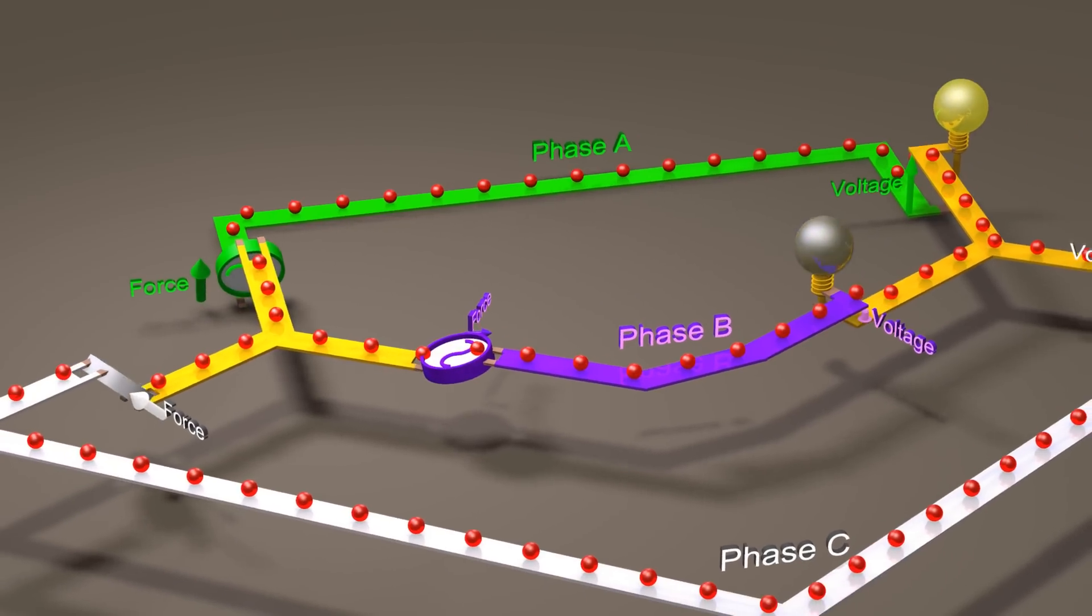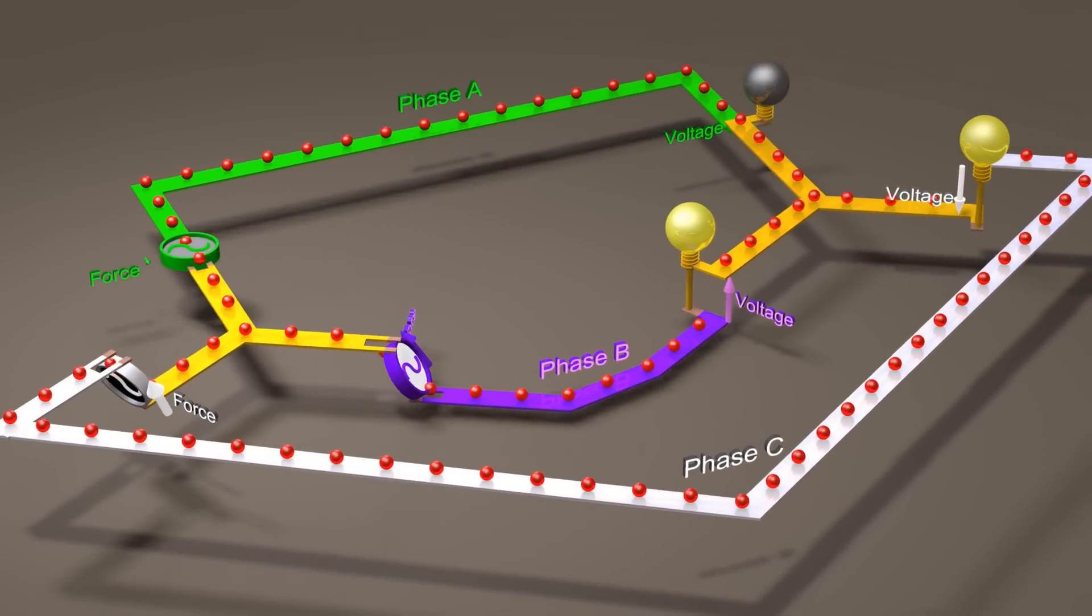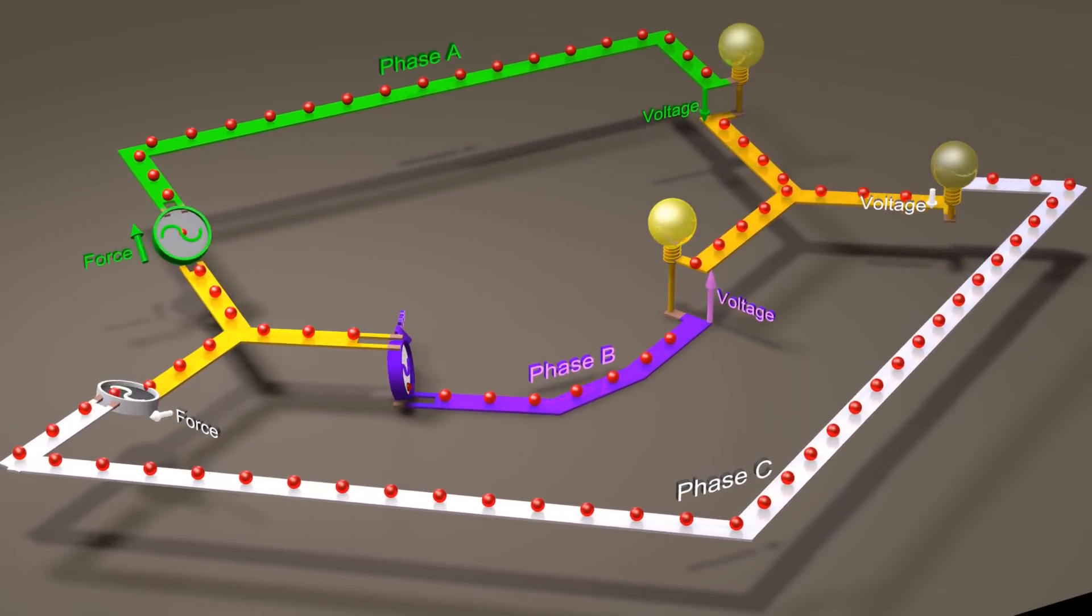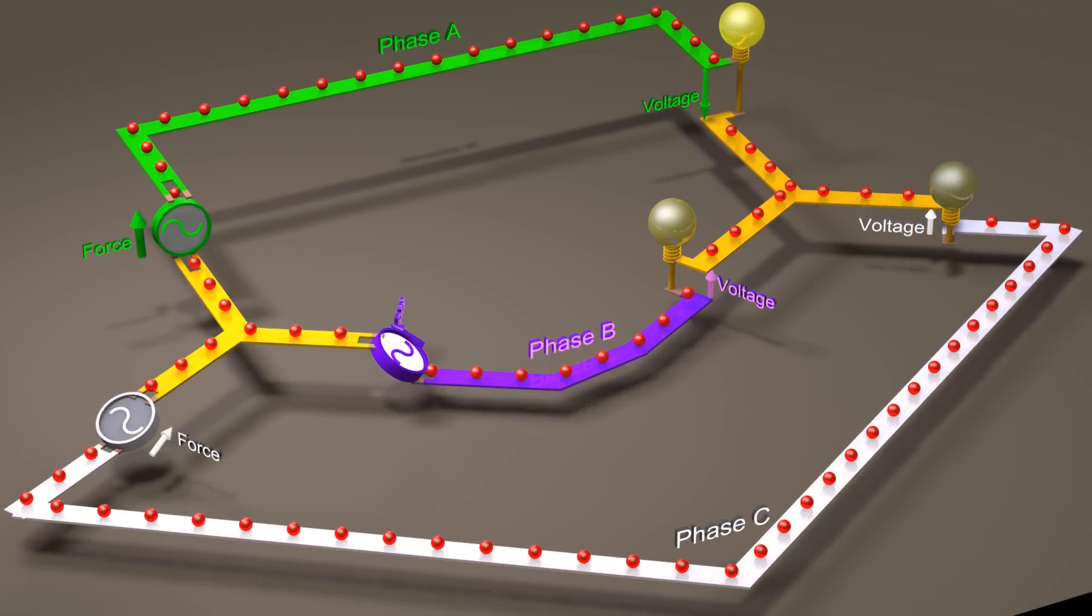Although the power through each lightbulb is constantly fluctuating, the sum of the total power through all three lightbulbs is always constant.